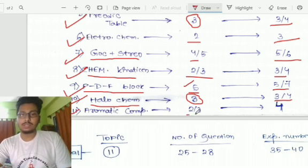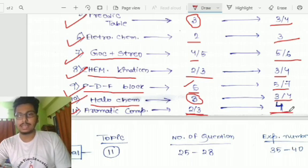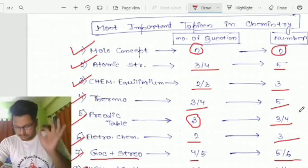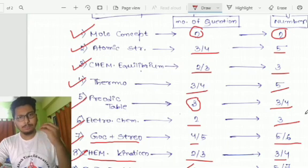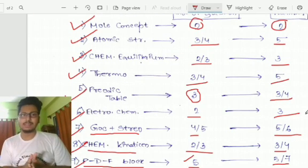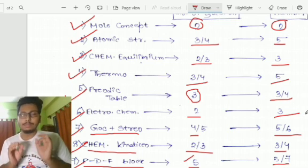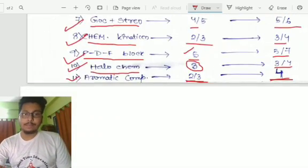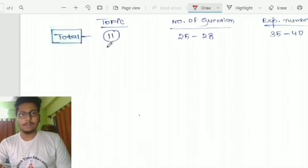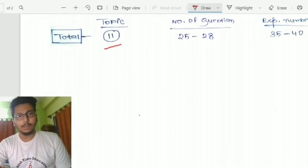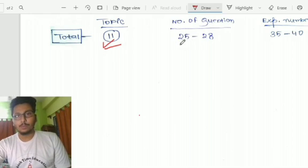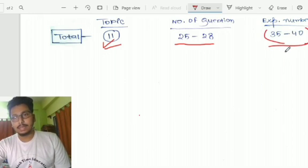Aromatic compounds, you will get two to three questions every year. I think that these 11 chapters according to me are the best for you for preparation in chemistry for WBJEE. If you look at the topics, I have 11 topics. I recommend you to read these 11 topics, where you will get 25 to 28 questions, and the expected number, you will score 35 to 40 marks out of 50.